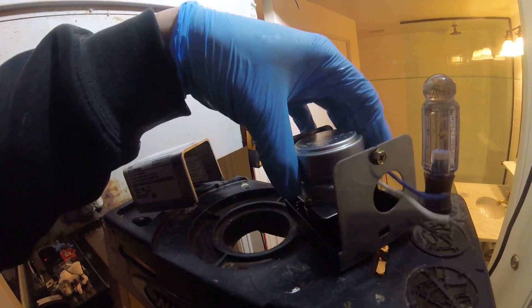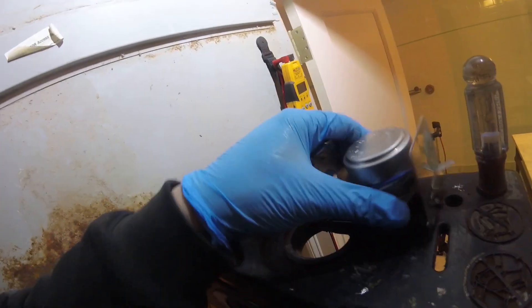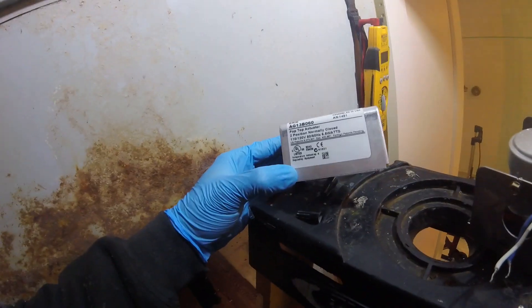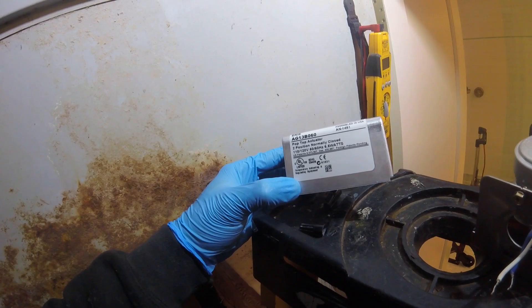So this is a pop out actuator. Just pull these. This can pop right off the valve. So this thing needs to be replaced. Let's see, this is a 120 volt valve. Two position.